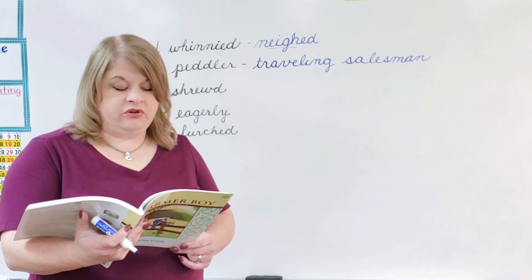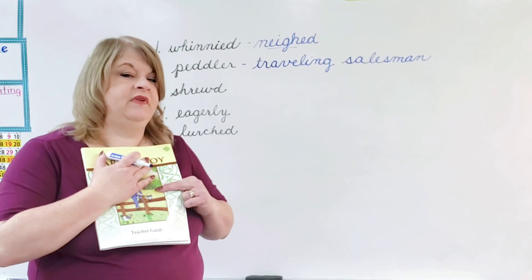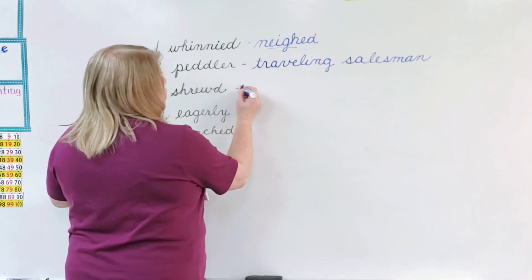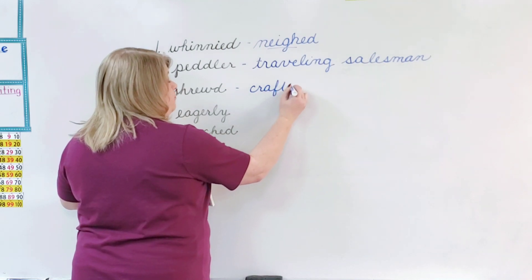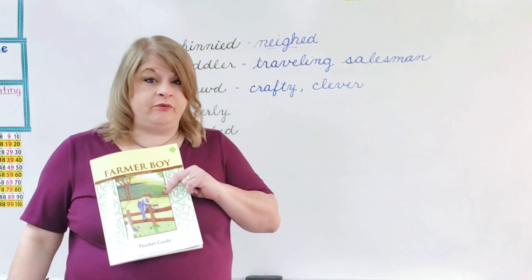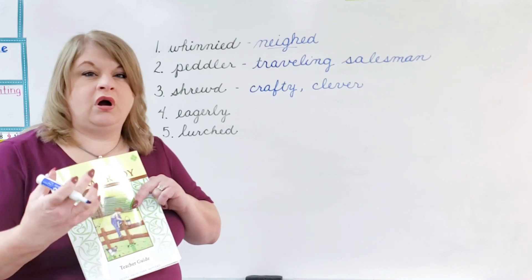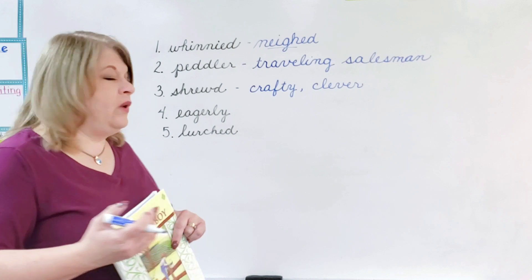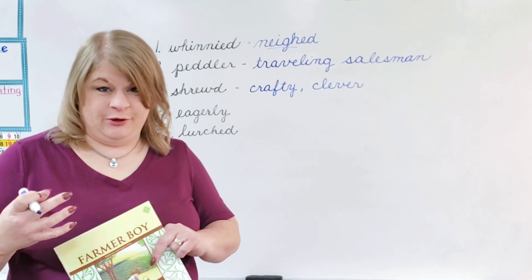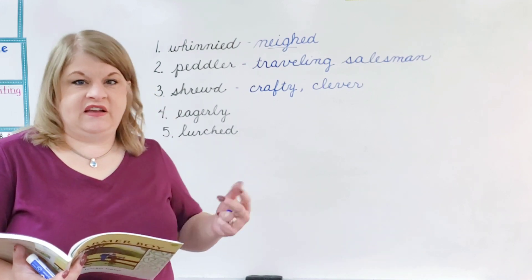Number three. Mother was a good shrewd trader. Trader, like she would trade things. Shrewd. Any ideas? Have you heard it in context before? Someone shrewd? In our book, we're going to say she was crafty and clever. Clever, we've learned before. Clever means smart. Not just book smart, but you know how to deal with people. You know how people think. You are smart when it comes to that. And you can figure things out. Crafty means you can figure out interesting ways to do things, to be smart about it.